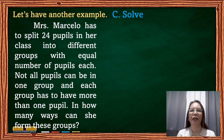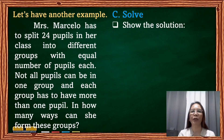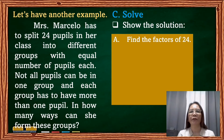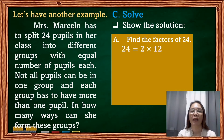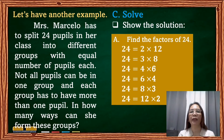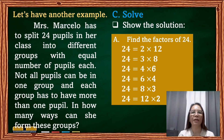After planning, we solve the problem by showing our solution. We can use factoring to find the factors of 24: 2×12, 3×8, 4×6, 6×4, 8×3, and 12×2. So you can group 24 pupils in 6 ways: groups of 2 by 12 members, 3 by 8, 4 by 6, 6 by 4, 8 by 3, and 12 by 2 members.